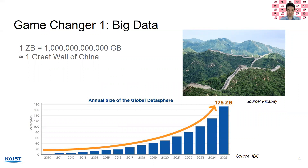Below, you can see an estimate of the total amount of data in this world for each year. The x-axis shows year, y-axis is number of zettabytes. In 2020, there seems to be about 50 zettabytes of data, and in 2025, it's projected to grow to 175 zettabytes — a huge increase. So it's safe to say that data will always increase exponentially.